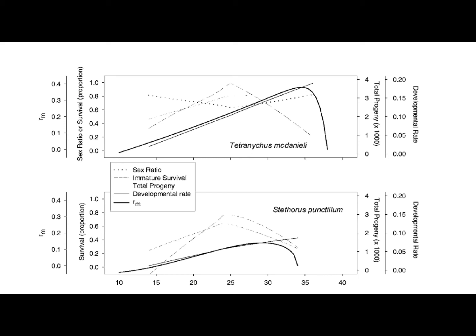Additionally, Stethorus punctilum's peak rate is about half of its prey's at the same temperature, and this means that at the agent's most favorable temperature, the prey generation reproduces twice as fast.